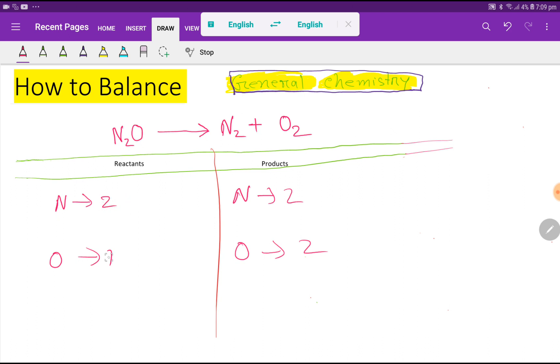To balance this reaction means we have to balance the number of nitrogen and oxygen from both sides. Look, to balance nitrogen, nitrogen is 2 to 2, nitrogen is already balanced. So to balance the oxygen, what can I do? I can multiply here by 2.